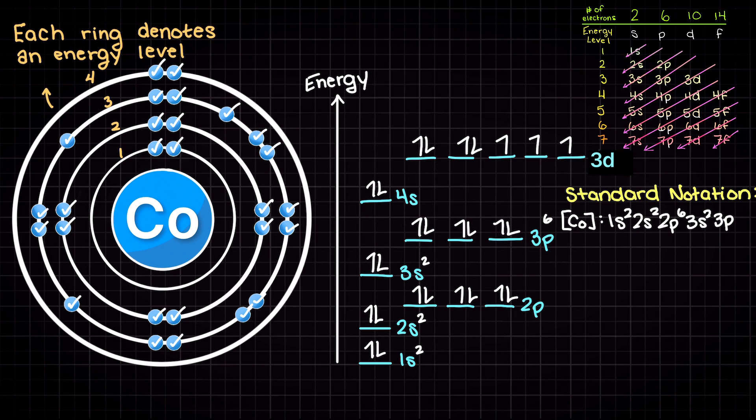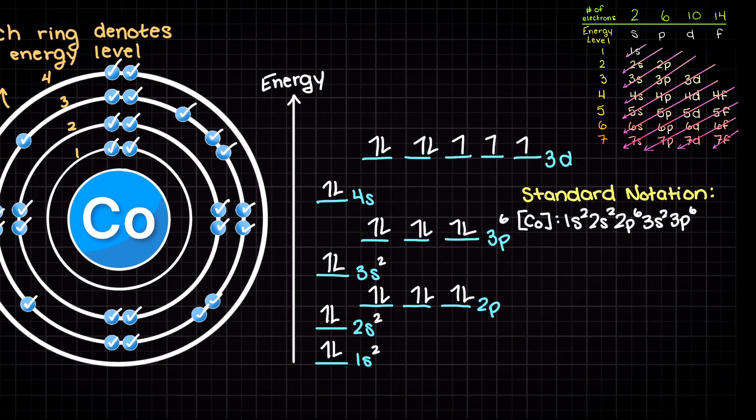To write the noble gas notation, we simply look at the noble gas that has a lower atomic number than cobalt. So that is going to be argon.